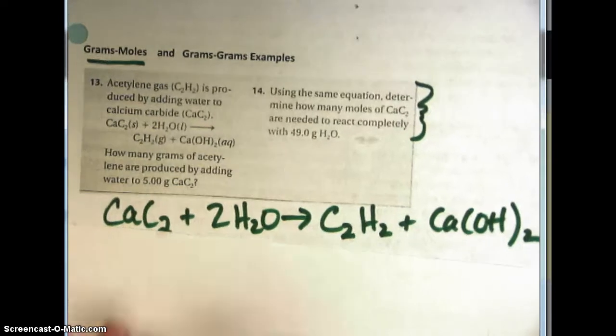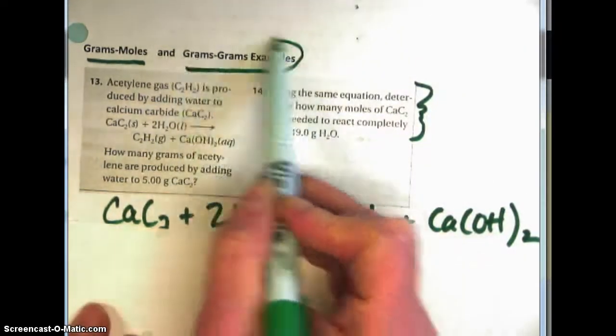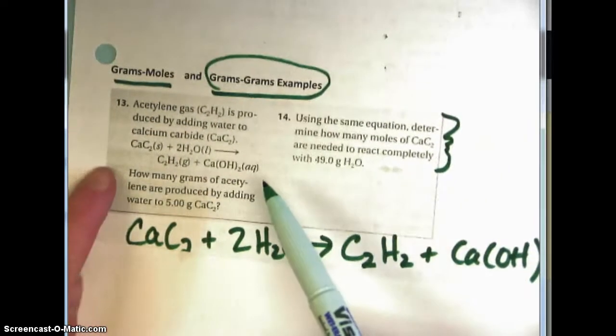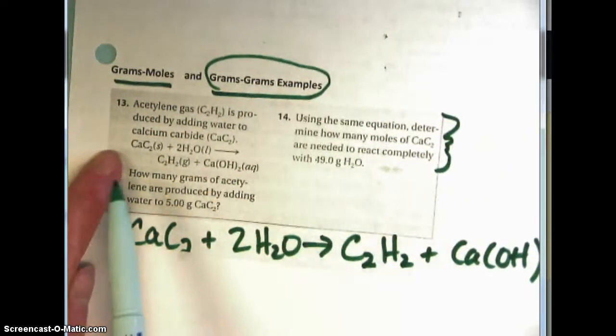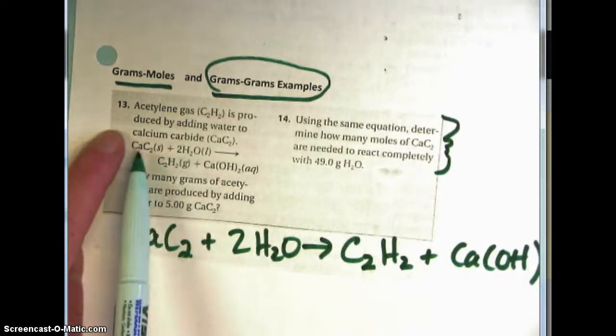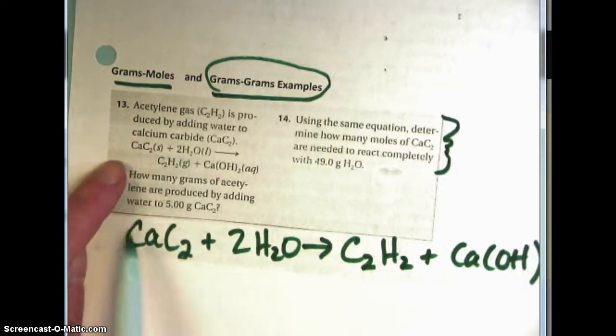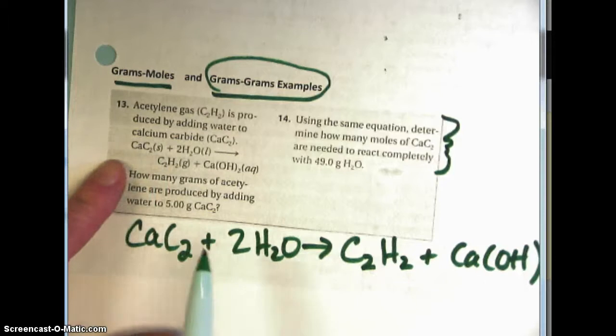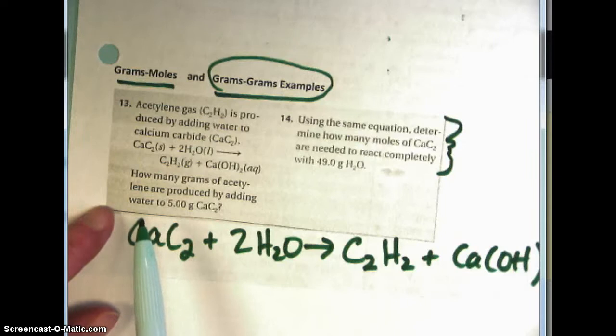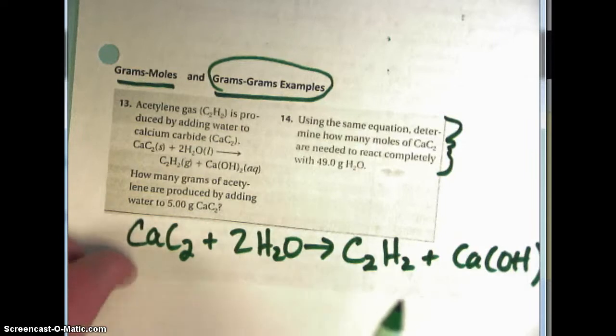In this next demonstration we are going to look at a grams to grams stoichiometry problem using the same equation as before. Acetylene gas is produced by adding water to calcium carbide in the following equation. How many grams of acetylene are produced by adding water to 5 grams of calcium carbide?